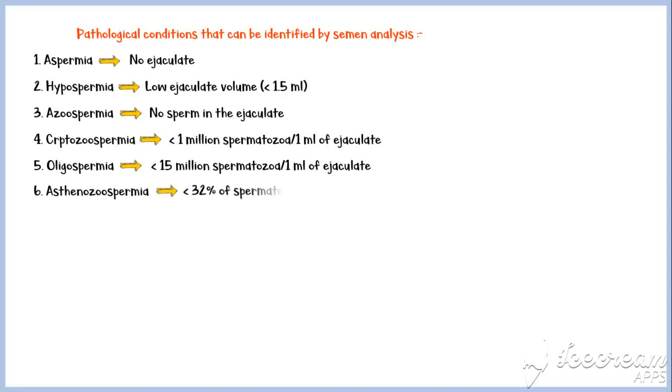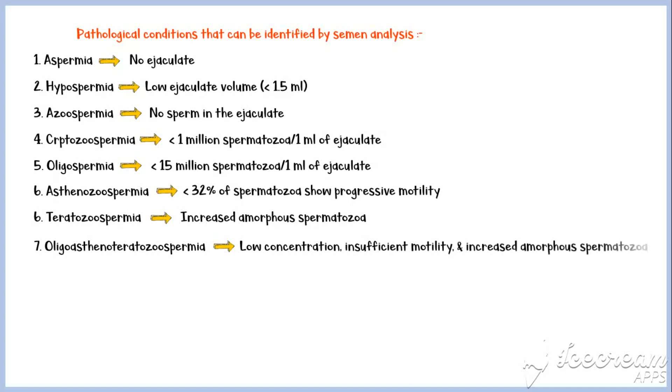Asthenozoospermia, where less than 32% of spermatozoa show progressive motility. Teratozoospermia, or increased amorphous spermatozoa. And oligoasthenoteratozoospermia, which is characterized by low concentration, insufficient motility, and increased amorphous spermatozoa.